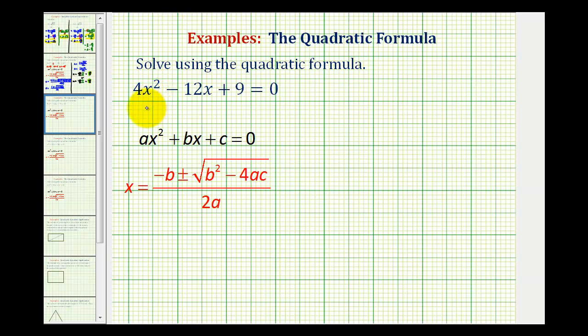We want to solve the quadratic equation 4x² - 12x + 9 = 0 using the quadratic formula provided here in red, where a, b, and c are the coefficients of the degree 2 term, the degree 1 term, and the constant.